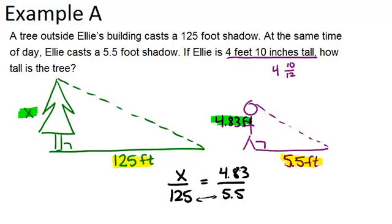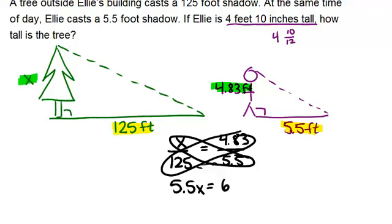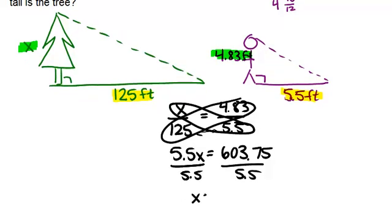We solve this by cross multiplying. We're going to multiply x times 5.5 and 125 times 4.83. So, we get 5.5x equals 603.75. And then just divide both sides by 5.5. You get x equals 109.77 approximately feet.